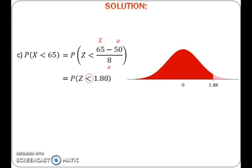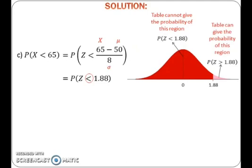To find probability, refer to the standard normal distribution table. Remember that the table gives probability of z greater than a certain positive value. Thus, the table cannot give probability of z less than 1.88. But since the table can give probability of z greater than 1.88, to get probability of z less than 1.88, take 1 minus probability of z greater than 1.88. Read probability of z greater than 1.88 from the table and calculate the probability.